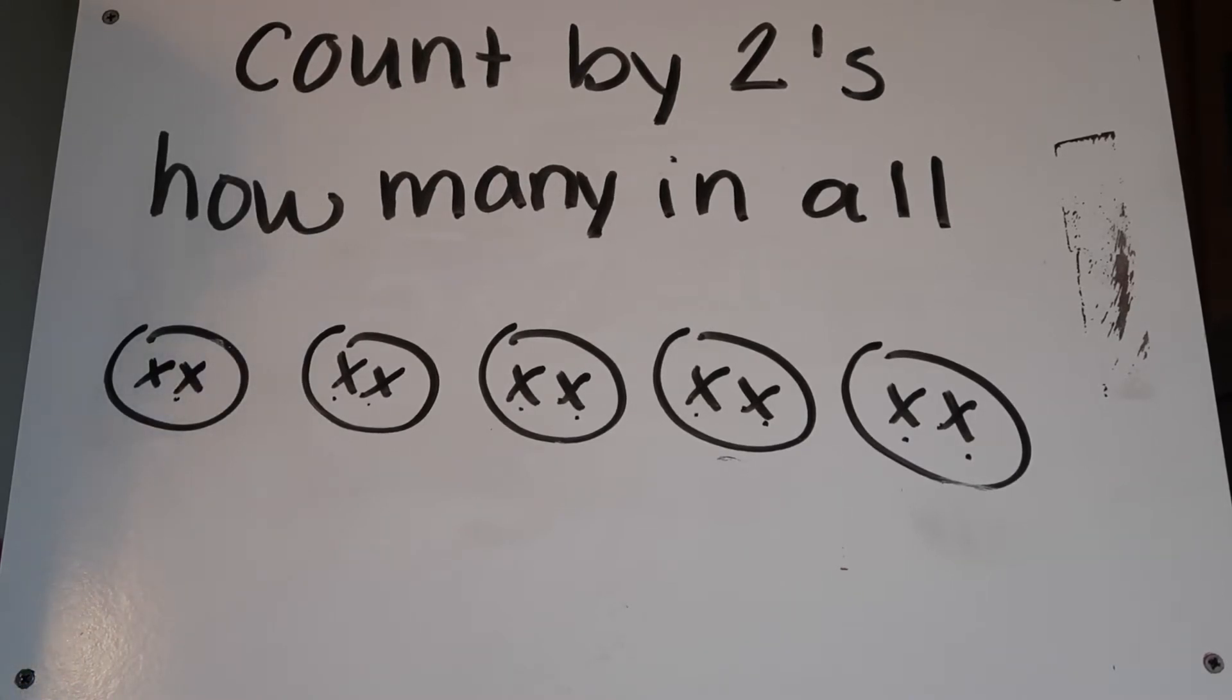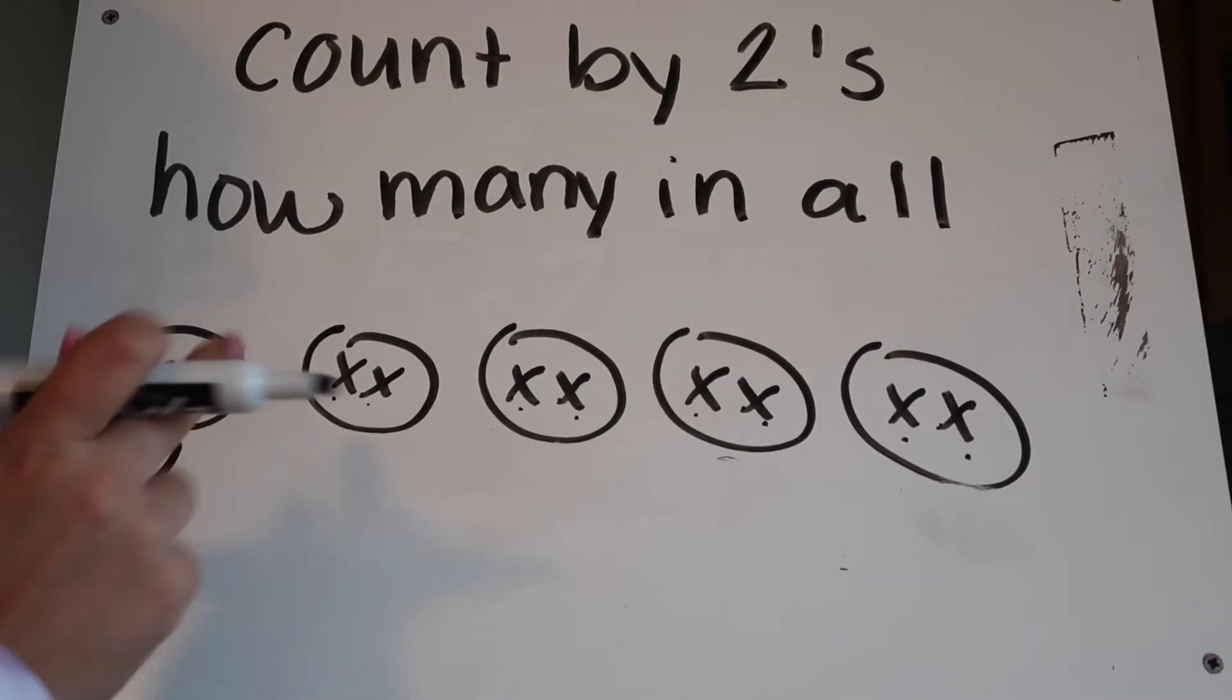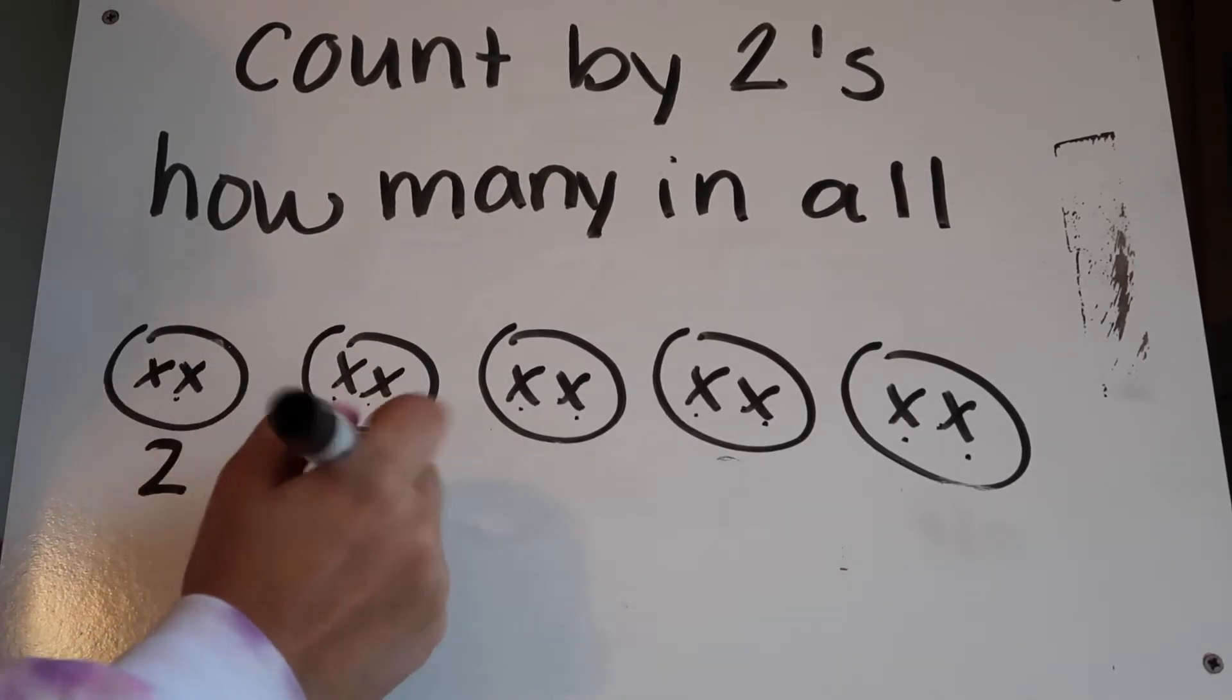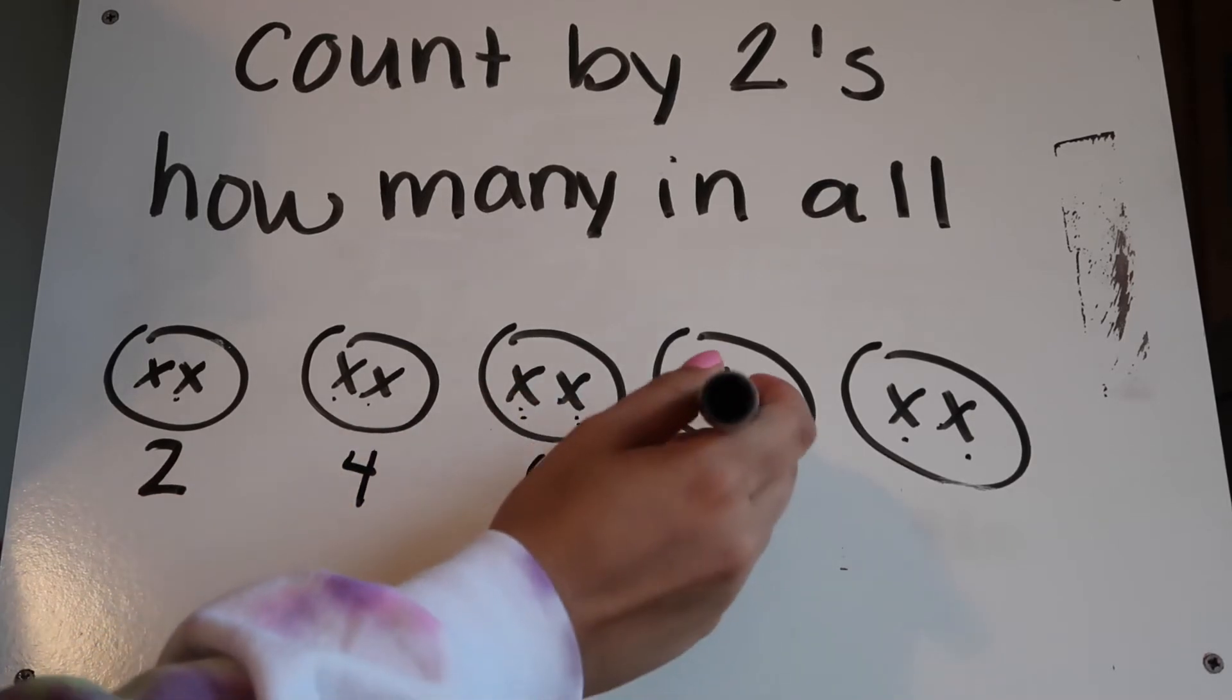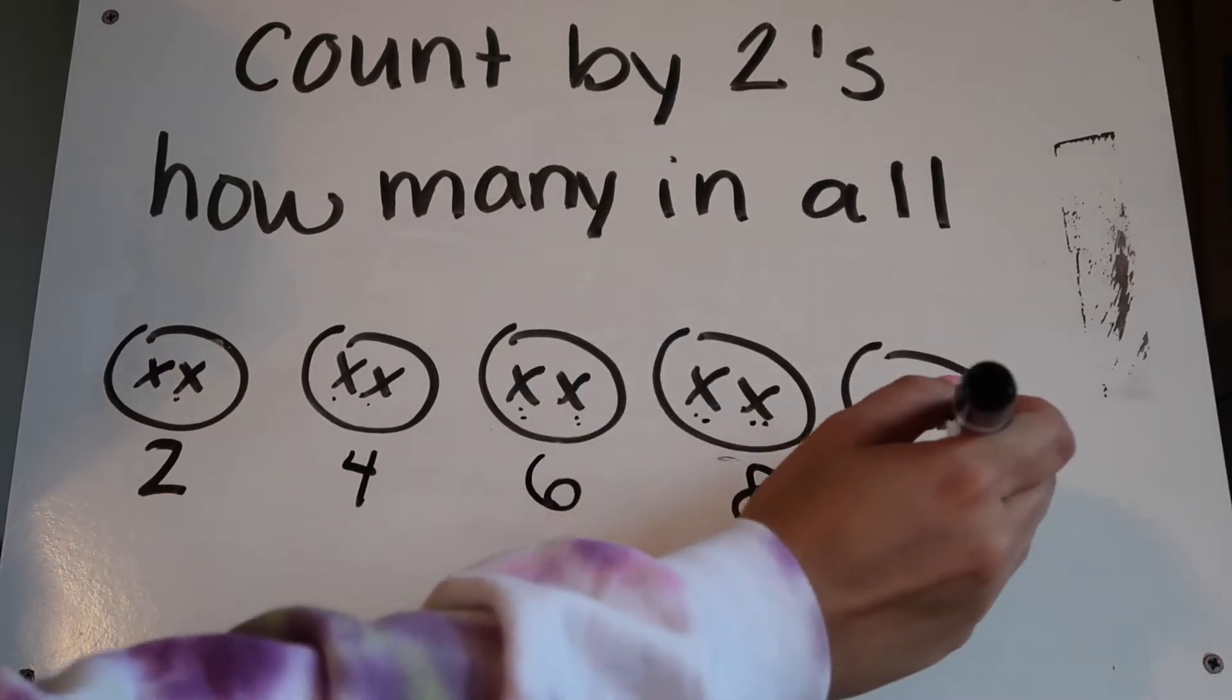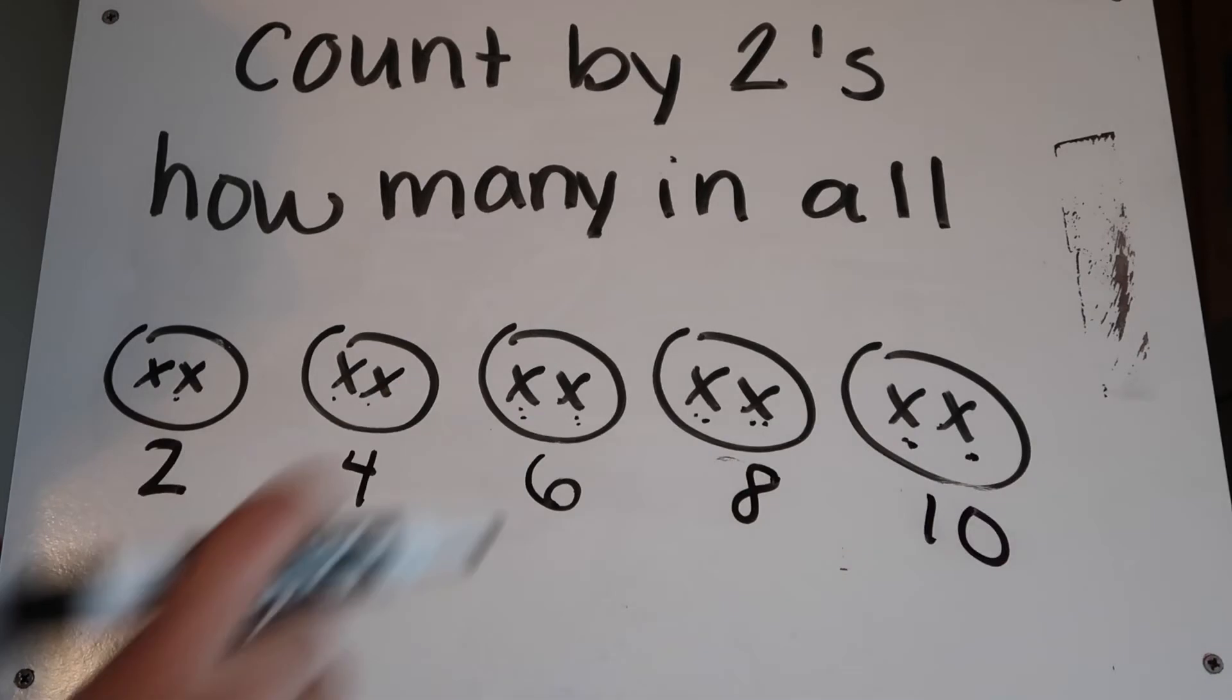So in this circle I have one, two. That tells me I'm counting by twos. What I can do is either continue my pattern or count how many are in each circle. So I'm going to count: one, two, three, four, five, six, seven, eight, nine, ten.